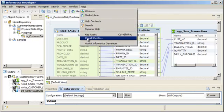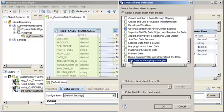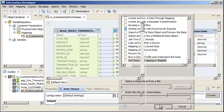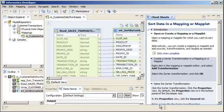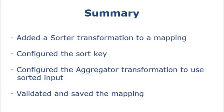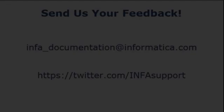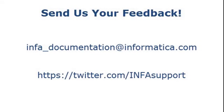Click Help, Cheat Sheets and select the Cheat Sheet called Sort Data in a Mapping or Maplet. That completes this demo. To summarize, we added a Sorter transformation to a mapping, we configured the sort key, we configured the aggregator transformation to use sorted input, and we validated and saved the mapping. If you have feedback on this demo or to request a demo on another topic, email us at info-documentation at informatica.com. You can also tweet us on the InfaSupport Twitter site.